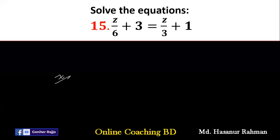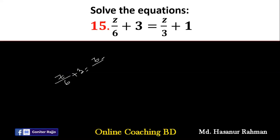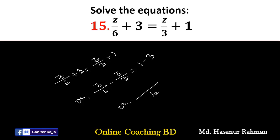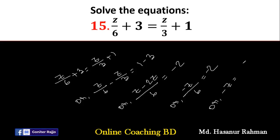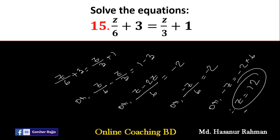Number 15 says z divided by 6 plus 3 equal to z divided by 3 plus 1. Rearranging: z divided by 6 minus z divided by 3 equal to 1 minus 3. The LCM of 6 and 3 is 6. So 6 divided by 6 is 1, giving z; minus 6 divided by 3 is 2, giving 2z. So z minus 2z is minus z divided by 6 equal to minus 2. Therefore minus z equal to minus 12, so z equal to 12.